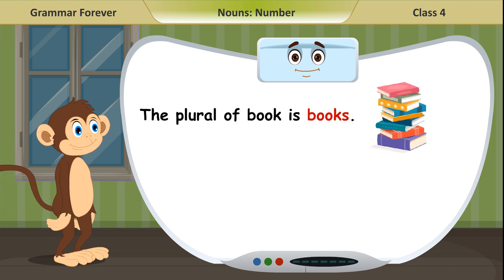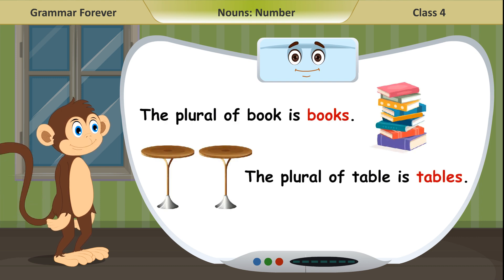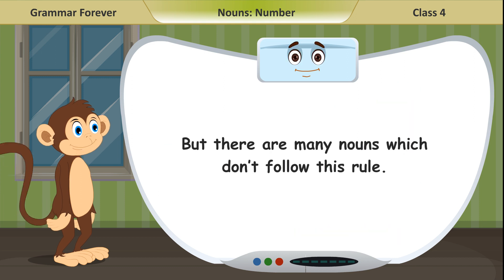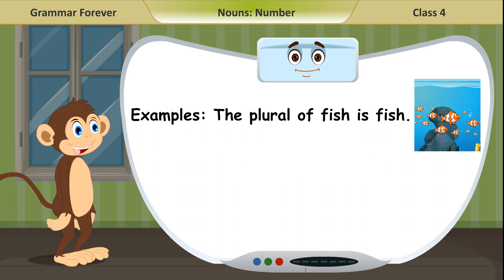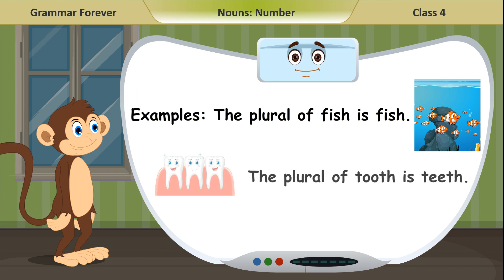Examples: The plural of book is books. The plural of table is tables. These are regular plurals. But there are many nouns which don't follow this rule. Examples: The plural of fish is fish. The plural of tooth is teeth. These are irregular plurals.